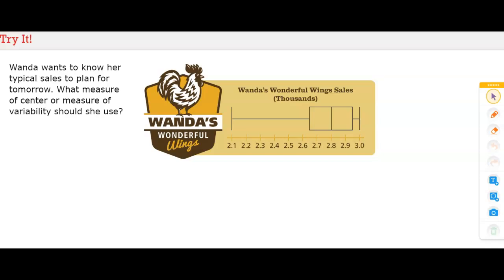Wanda wants to know her typical sales to plan for tomorrow. What measure of center or measure of variability should she use? Once again, the measure of center is either the mean or the median. If we were to use the mean, that would give us the average of all of the data from here to here. But because a lot of that data is, most of the data is within this portion of our line plot, then mean would not be a good measure of center for her to use. That would be the median because the median would give us this number here, which is at 2,800. That would be the best data to go to plan for her sales tomorrow.